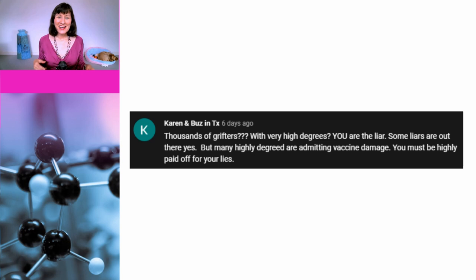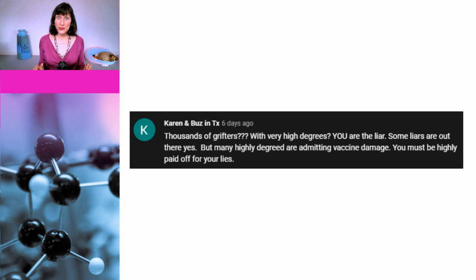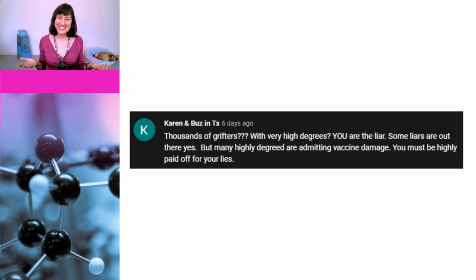This comment was left on a recent video of mine which presented data showing that claims by some grifters that vaccines were causing excess deaths couldn't possibly be true. The comment said: 'Thousands of grifters with very high degrees... many highly degreed are admitting vaccine damage.' Now of course having a high degree doesn't mean that your degree is remotely relevant to understanding vaccine science — for example, your degree could be in English literature. So this is an appeal to false authority.